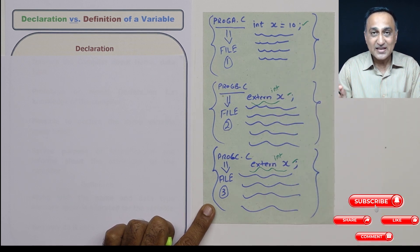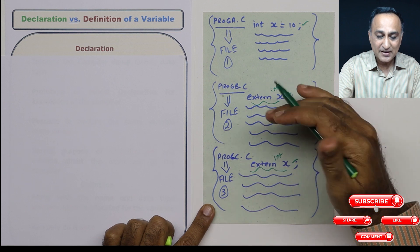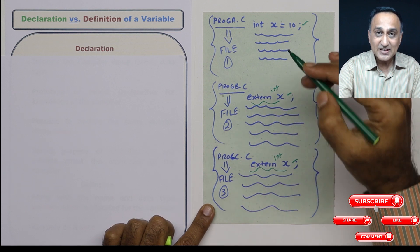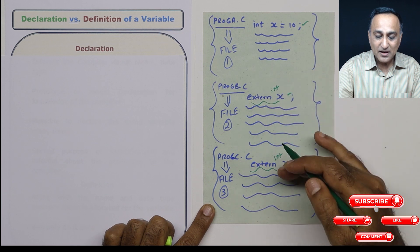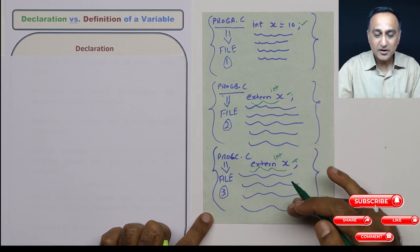no storage space is allocated. It just tells the compiler that I'm using x, which is defined somewhere, and I am merely referring to x in this particular program.